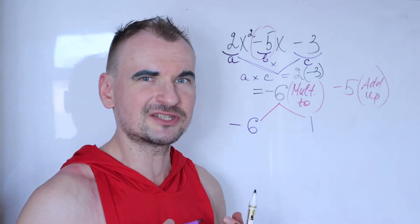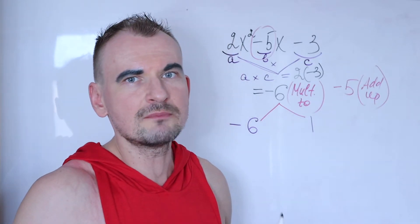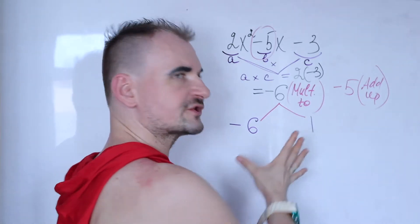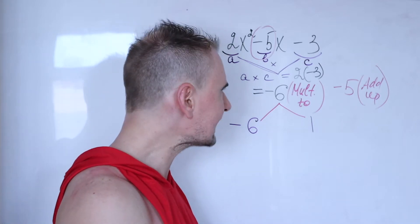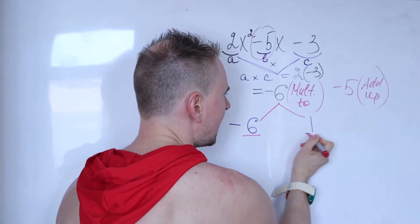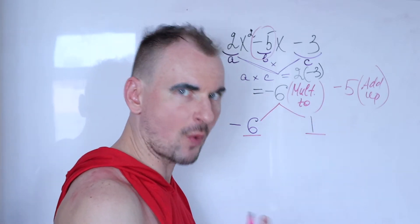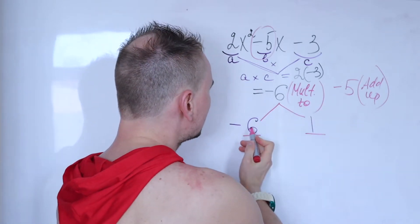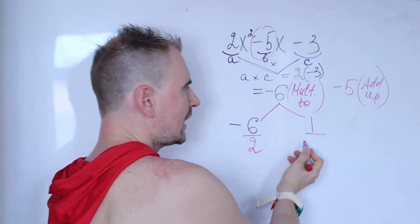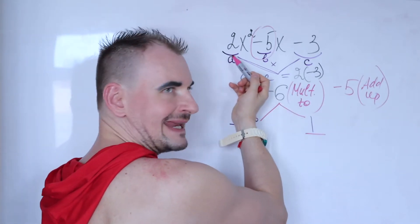It can take a little time to figure out these numbers, but it comes with practice. Now that we've found the two numbers, the next step is to divide both of these numbers by a, your leading coefficient. So divide negative 6 by 2, and divide 1 by 2.